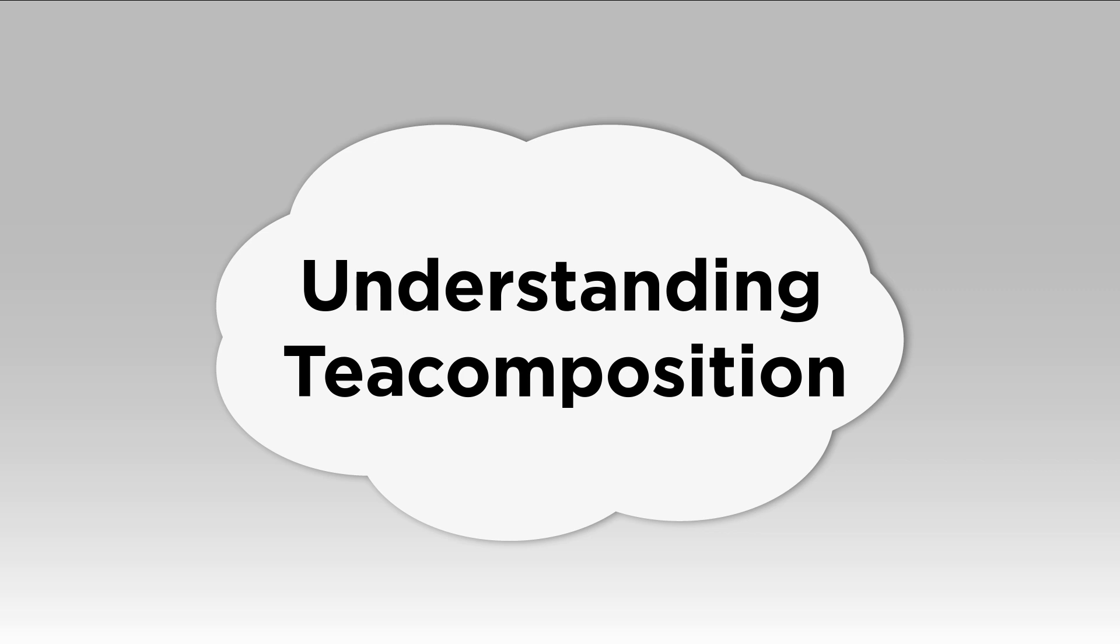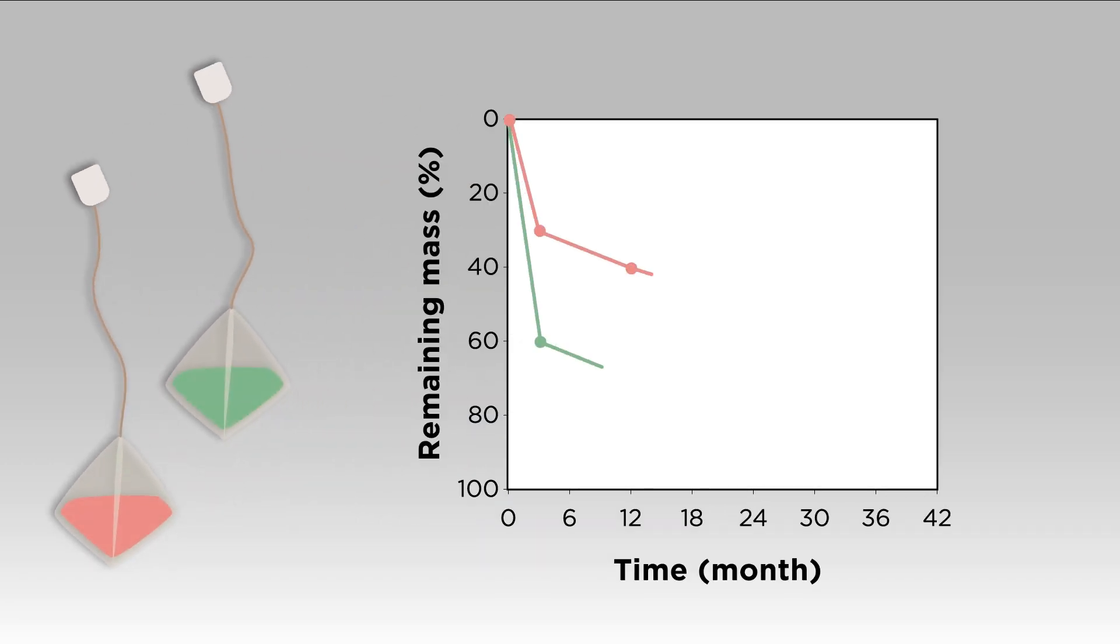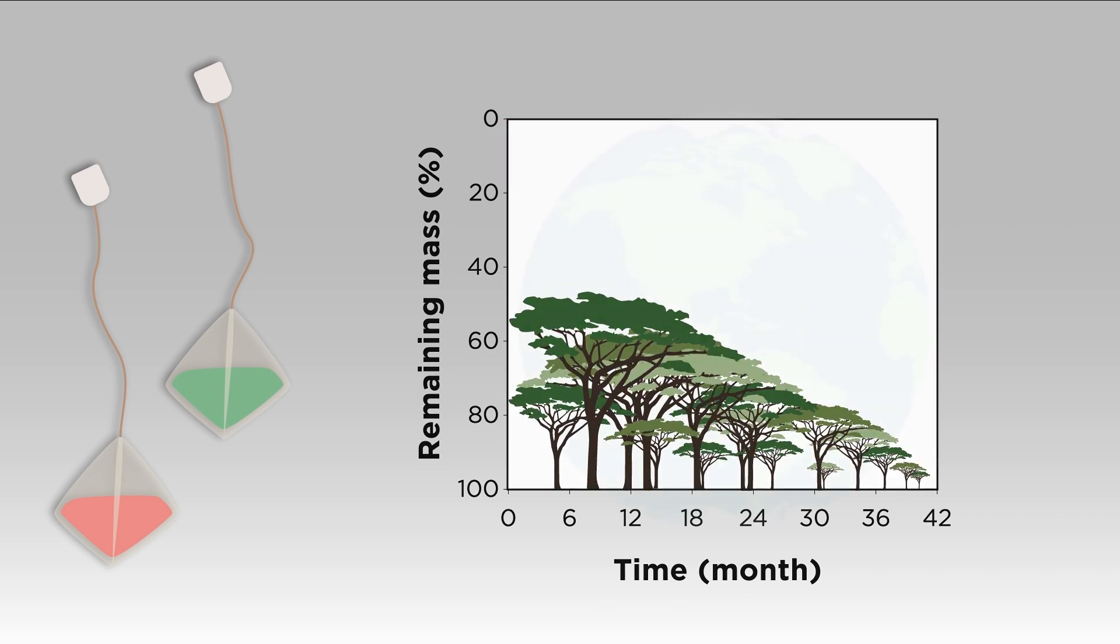An excellent example for this is the Global Litter Decomposition Initiative, Tea Composition. Here, commercially available household tea bags with different decomposition rates, green tea and rooibos tea, are used to determine decomposition over time and across all biomes.